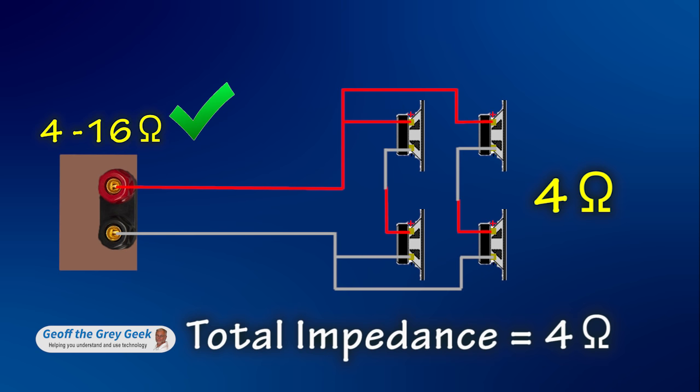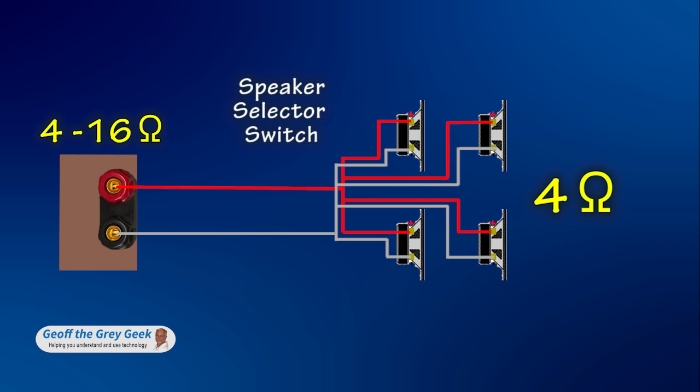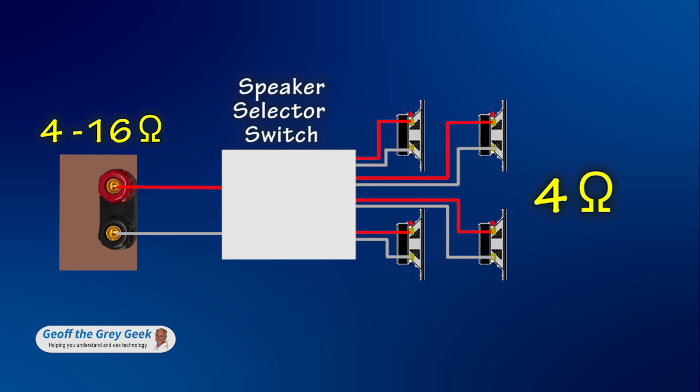Often a better solution is to use a speaker selector switch with impedance protection. These are connected adjacent to the amp and all the speakers are then connected to the switch. Speaker selector switches use one of three methods to provide impedance protection or impedance matching.